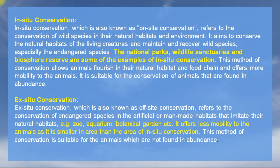If we talk about ex-situ conservation, it means off-site conservation, which refers to conservation of species that live in artificial or man-made habitats. National Parks, Wildlife Sanctuaries, or Biosphere Reserves are not man-made. But Zoos, Aquariums, and Botanical Gardens are man-made — they also keep species. Now the question comes: National Parks, Biospheres, and Wildlife Sanctuaries — what is the difference between these three terms?